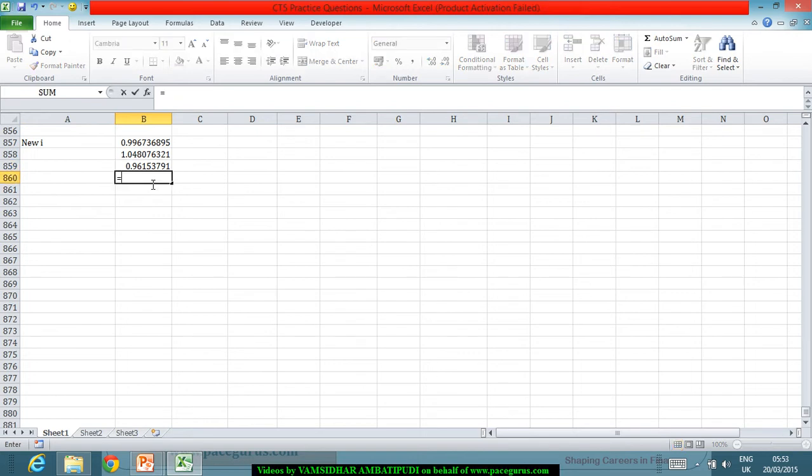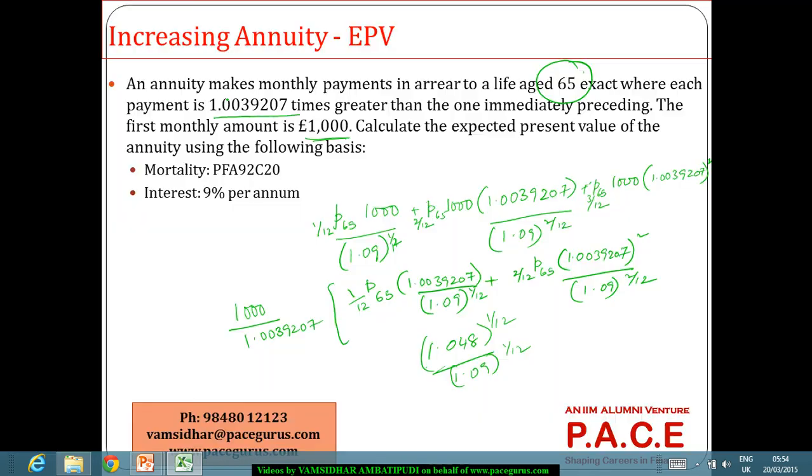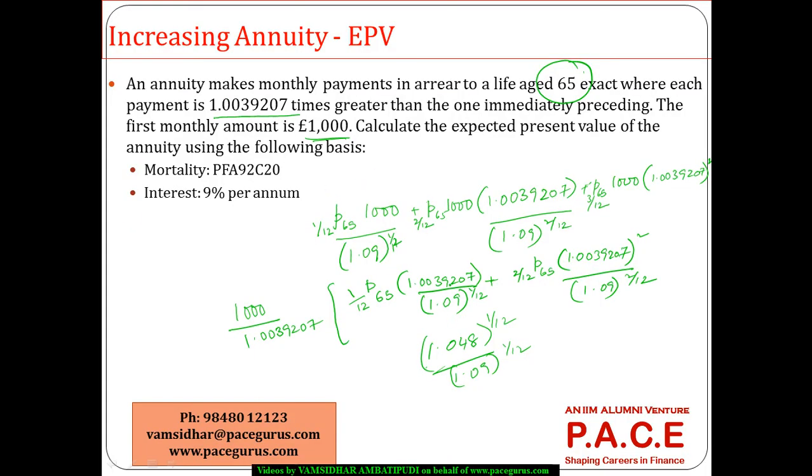So I will say this number to the power 1 by 12. And if you reverse it, 1 by of this, it is exactly coming out to almost 4%. If you are reversing, which means your new I is just around 4%. In this case, your new I is 4%. Which means this you could have written it as 1 by 12 P65 times 1 by 0.04 to the power 1 by 12 plus 2 by 12 P65 times 1 by 1.04 to the power 2 by 12, which in a case is simply giving us a logic.